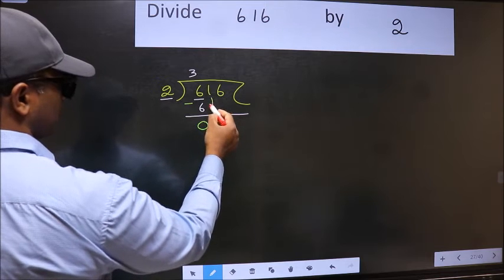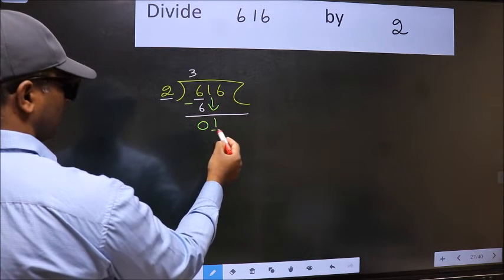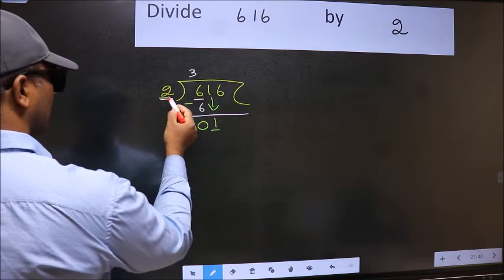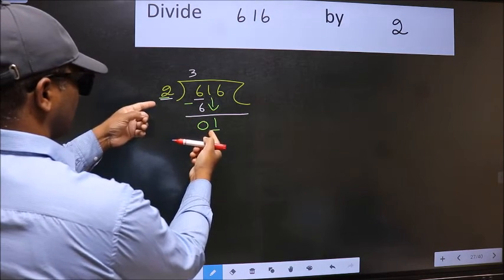After this bring down the beside number. So 1 down. Now here we have 1 and here 2. 1 is smaller than 2.